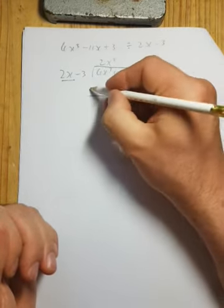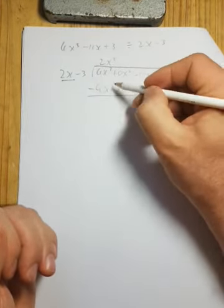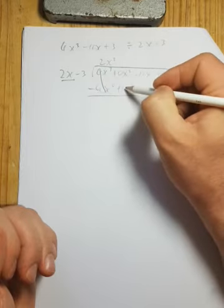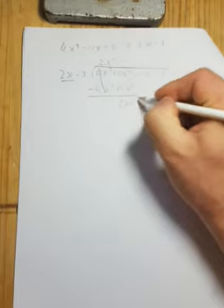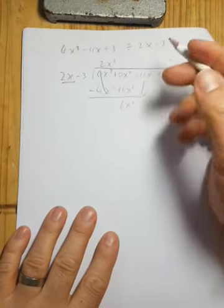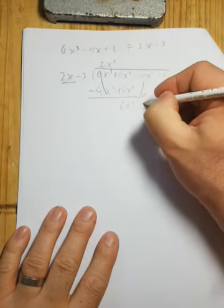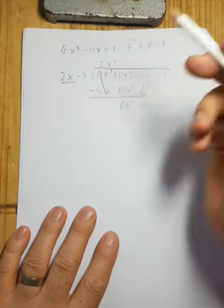Step three, we change our signs. So this plus becomes a minus, they cancel, this minus becomes a plus. So now 0 plus 6 is 6x squared. Step four, we bring down the next term. And we're back to the top.